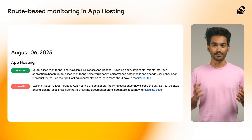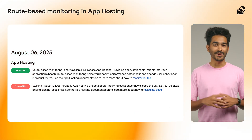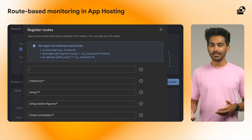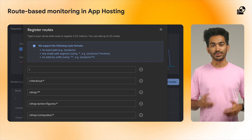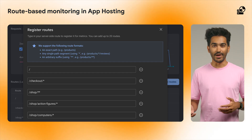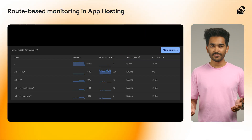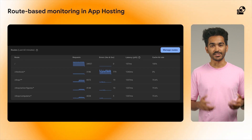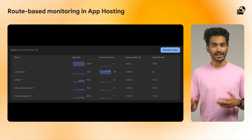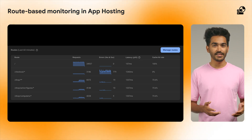Now let's talk about route-based monitoring in Firebase App Hosting. That's a new feature which allows you to specify up to 20 routes in your app that are important to you, and for each of them it will show metrics such as number of requests, errors, latency, and CDN cache hit rate. If you want to see this feature in more detail, stay tuned to our YouTube channel as we will publish a deep dive video about this in the following weeks.